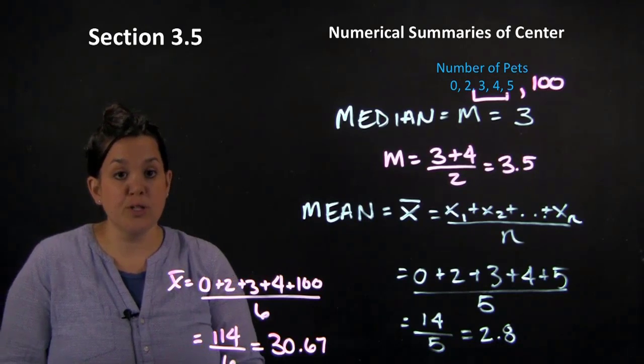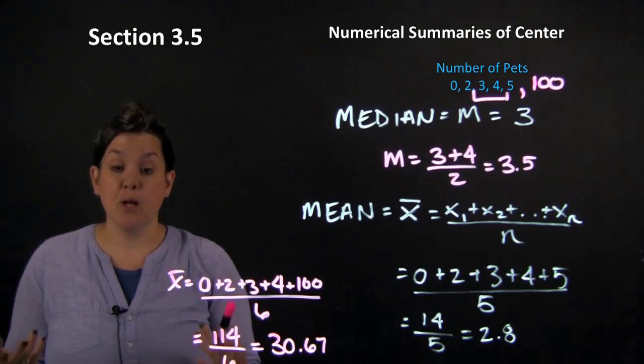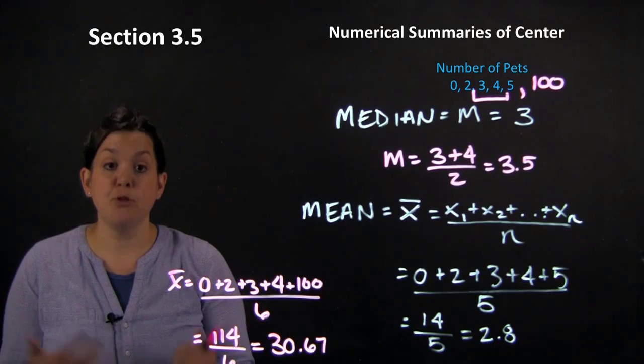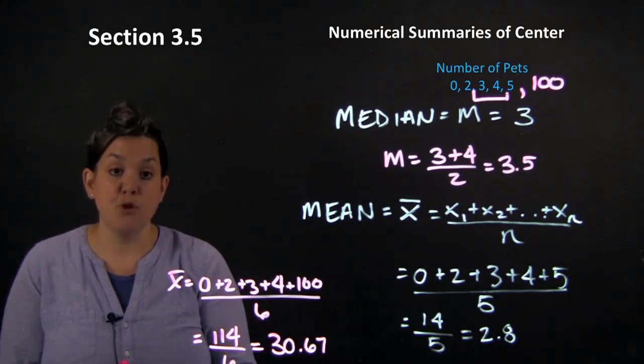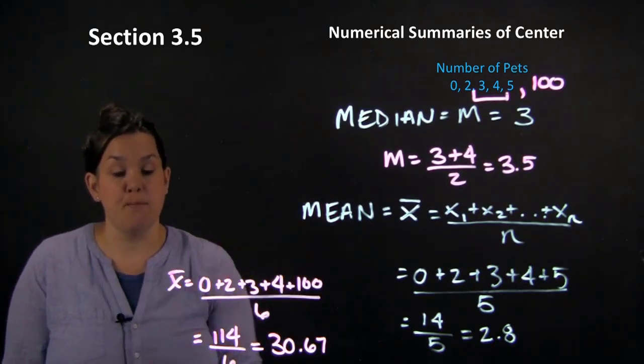So those are two looks at numeric summaries of center. And again, remember that when you describe a distribution, you have two measures of center now that you can use both the median and the mean.